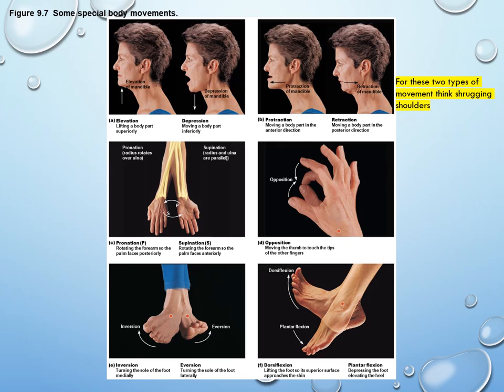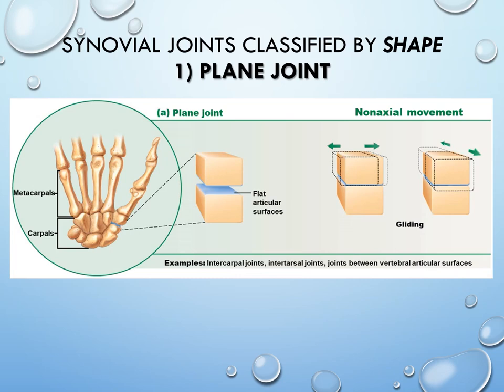Additional special movements include opposition — pressing each finger against the thumb, a movement many animals can't do. In the ankle, dorsiflexion brings the toes upward toward the sky, while plantarflexion points the toes toward the ground. These names simplify describing the combined movements happening at the ankle and toes.